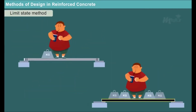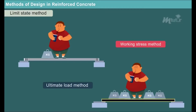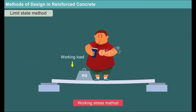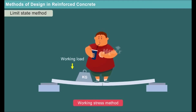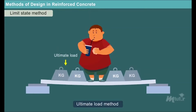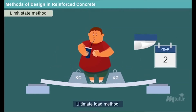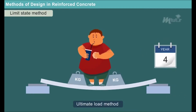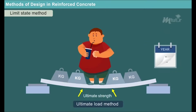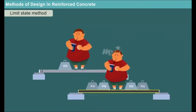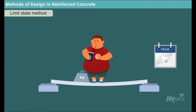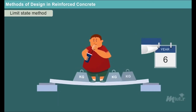Now let us discuss the third method — the limit state method, which was developed to overcome the discrepancies in the other two methods. The working stress method gives satisfactory performance at working load but is unrealistic at ultimate state of collapse. Similarly, the ultimate load method ensures realistic assessment of safety but does not guarantee serviceability requirements under service load. An ideal method of design should not only consider the ultimate strength of a structure, but also concentrate on serviceability and durability requirements. Limit state method considers both working and ultimate loads with a view to satisfy the requirements of safety and serviceability.